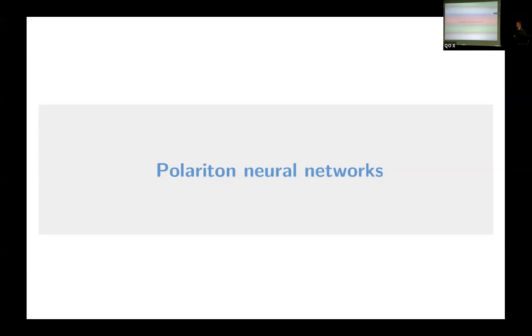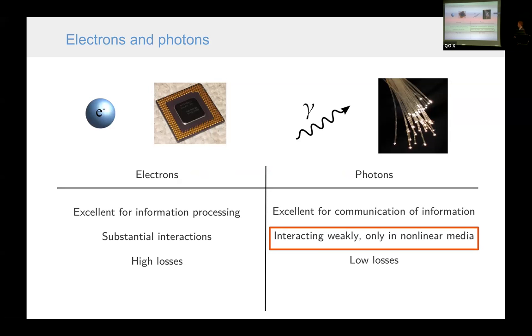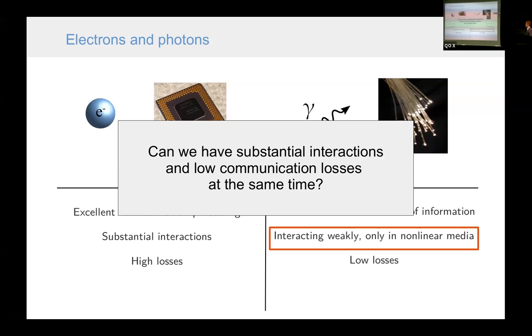Now I would like to move to polariton neural networks. Why do we want to consider polariton neural networks? Well, I was mentioning before that photons are interacting very weakly. This is a problem for computing in general and for neural networks as well, because if we want to build a neural network which is performing a complicated task with high accuracy, we need some kind of nonlinearity. And this is very crucial that the activation function of the neuron is nonlinear. The question is, can we have substantial interactions, as in the case of electrons, and low communication losses that we would like to have in photons?